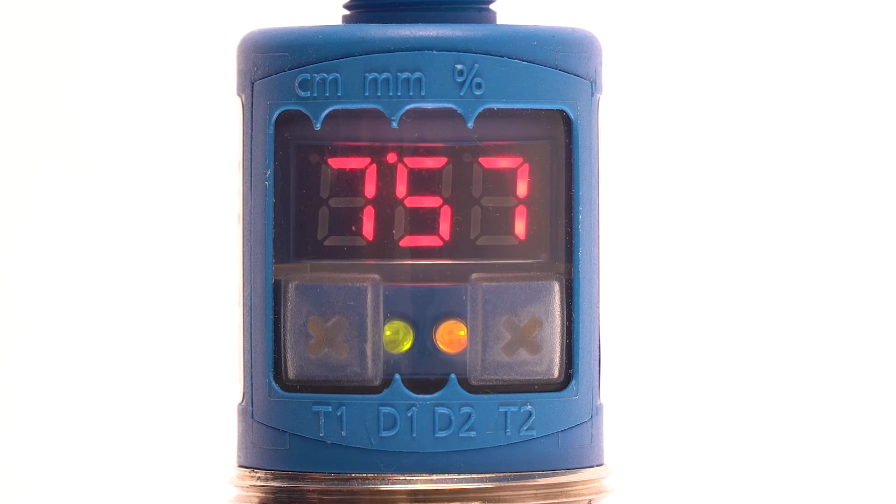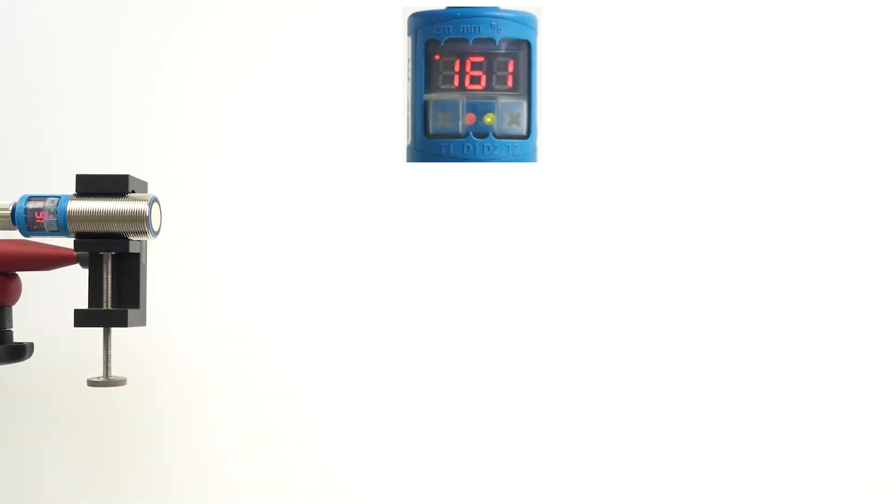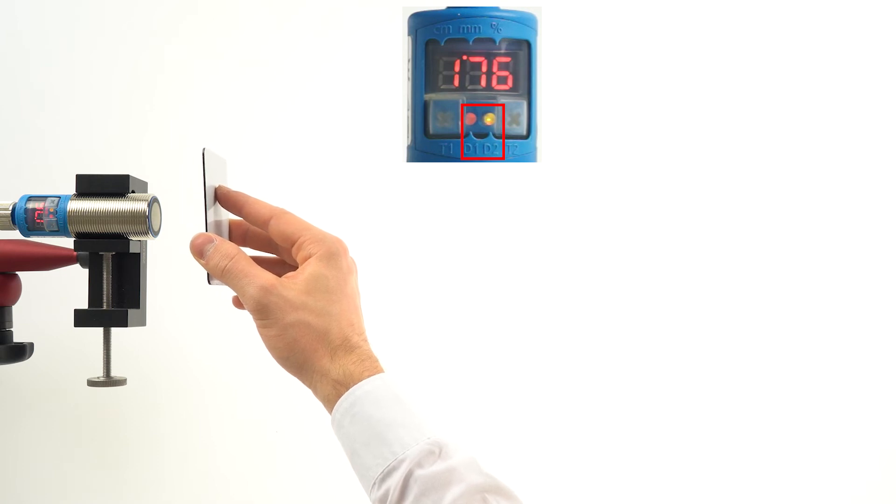Depending on object positioning, you will see the following behavior of LED D1 and LED D2, which indicate the output status. Objects within the blind zone of the sensor and objects outside of the sensing range show red for D1 and orange for D2.